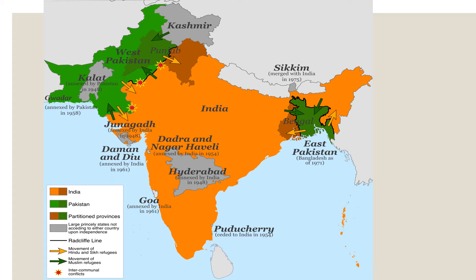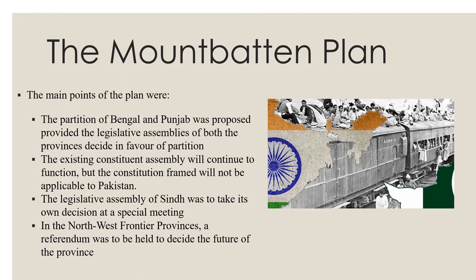You can see on the map that the areas in green are parts of India that went to Pakistan — parts of Punjab, West Pakistan, Kalat, Gwadar, extending all the way into Afghanistan. In the east you can see part of Bengal which became East Pakistan, and it later became the independent country of Bangladesh. The Mountbatten Plan proposed that the partition of Bengal in the east and Punjab in the west would be provided for if the legislative assemblies of both provinces decided in favor of partition.